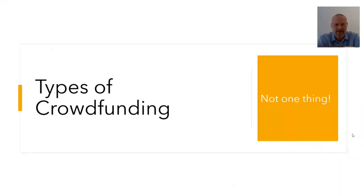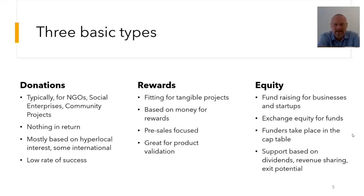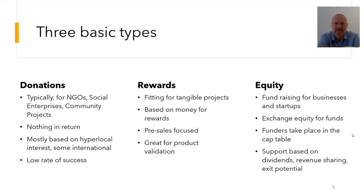There are three main types of crowdfunding. The first is donations, typically used for non-governmental organizations, social enterprises, and community projects — anything that doesn't create a product but aims to better our lives or the lives of others. There's nothing tangible in return, and it's mostly based on hyper-local interests, though some large international organizations like UNICEF run donation crowdfunding campaigns.